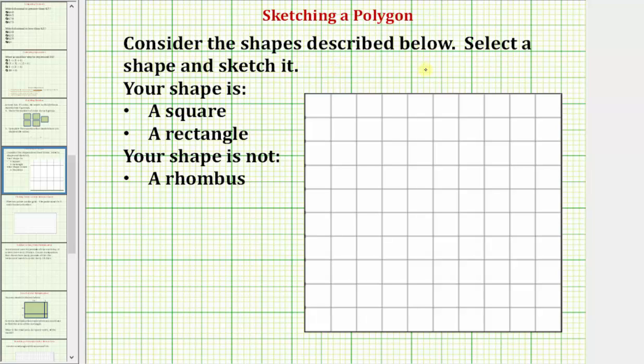We're asked to consider the shapes described below. Select a shape and sketch it. Notice how we have a choice of a square or a rectangle, and we're also told the shape is not a rhombus.